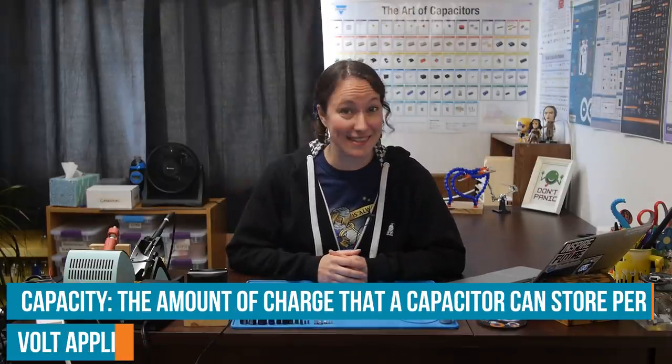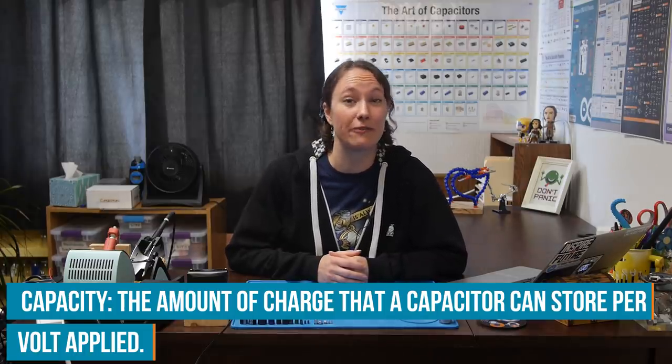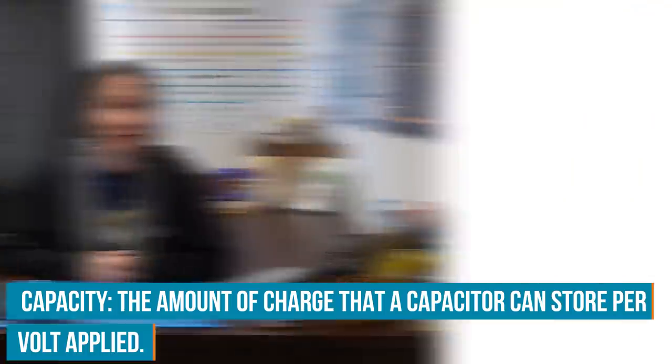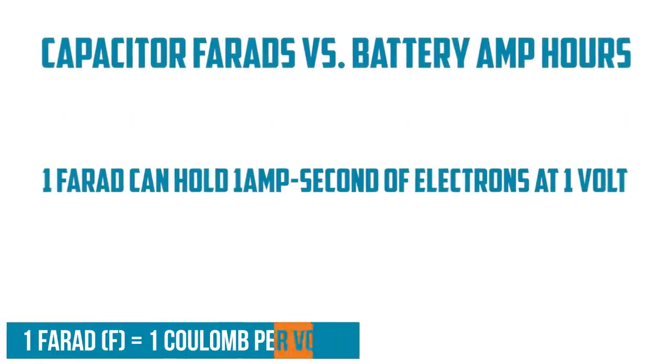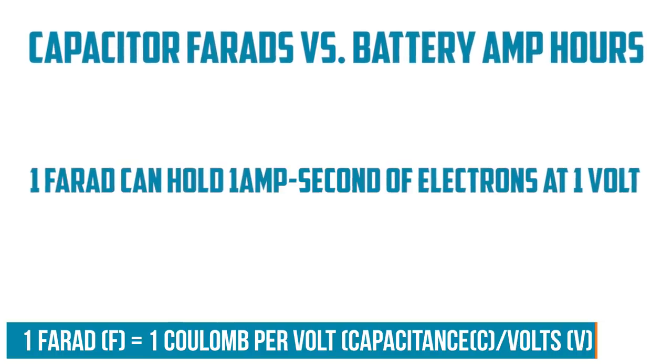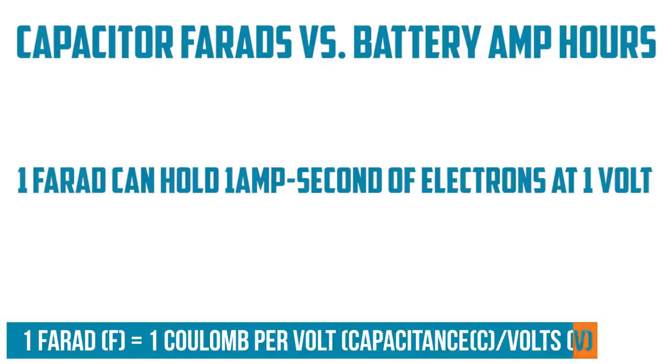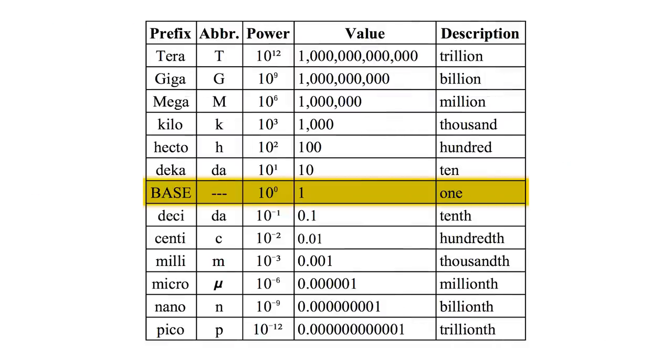Capacitors are named for their capacity, or how much charge they can hold. Capacitance is measured in farads marked with a capital F. Farads of a capacitor can be thought of kind of like amp hours of a battery. While they provide a set maximum voltage, their rating determines how long it can sustain providing that voltage. One farad is a very large unit of measurement. Capacitance ratings are often much smaller, typically measured in millionths of a farad, microfarads, or trillionths of a farad, picofarads.